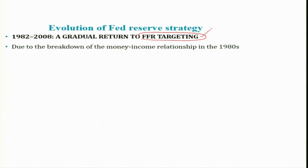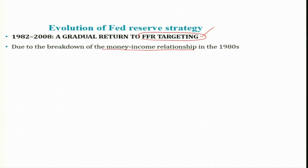Overall, they continued with FFR targeting — that is, interest rate targeting — by abandoning monetary aggregate targeting. The main reason for abandoning monetary aggregates targeting was the breakdown of the money-income relationship observed in the 1980s, which forced the Fed to abandon money supply targeting and switch back to Fed funds rate targeting. The instability of money demand was also a phenomenon of the 1980s, contributing to the overall breakdown of the money-income relationship.